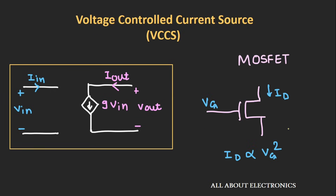The practical example of a voltage-controlled current source is the MOSFET. In the MOSFET, as we change the gate voltage, the drain current changes accordingly, and the approximate relation can be given by this expression. So as we change the gate voltage, the drain current changes accordingly.